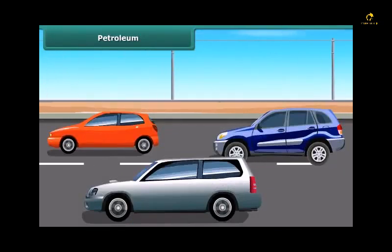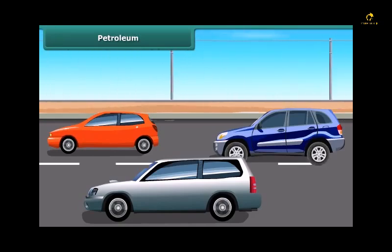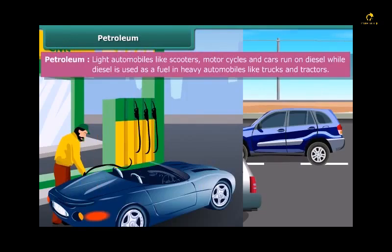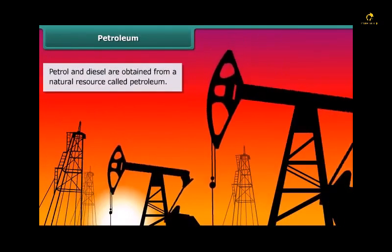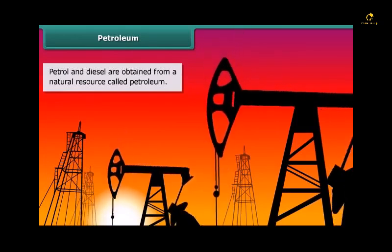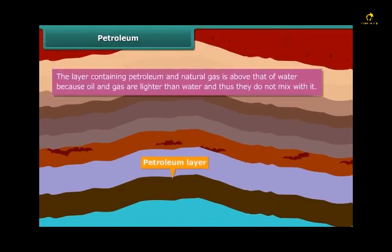You are all fond of luxury cars and vehicles, but do you know which fuel they run on? Most of these run on either petrol, diesel, or compressed natural gas, also known as CNG. Petrol and diesel are obtained from a natural resource called petroleum. Petroleum and natural gas deposits exist as a layer above the water layer.